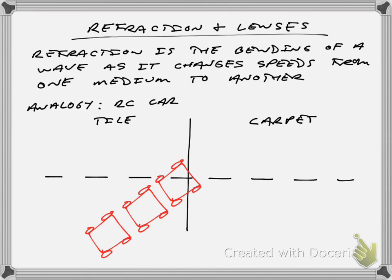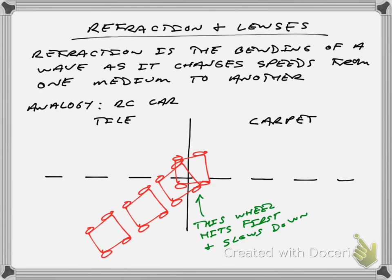As the car comes in at an angle and hits the carpet, the wheels don't transfer onto the carpet at the same time. The front right wheel hits the carpet first and slows down. If it slows down before the left front wheel, that causes the car to bend and rotate until the front left wheel hits, and a similar thing happens with the back wheels, until the car ends up bending to the right. This is what happens with refraction — going from a fast medium to a slow medium bends the wave toward the normal line, a line perpendicular to the surface.